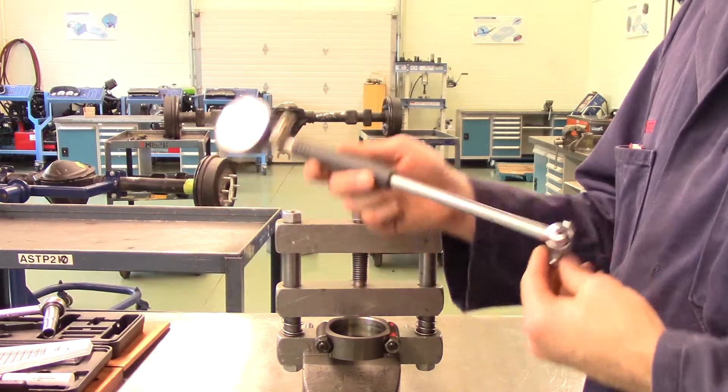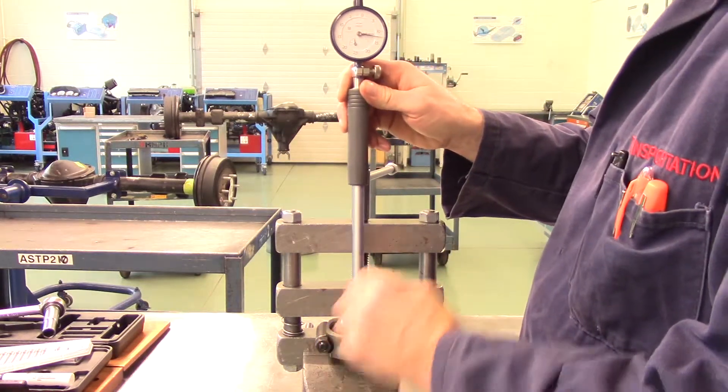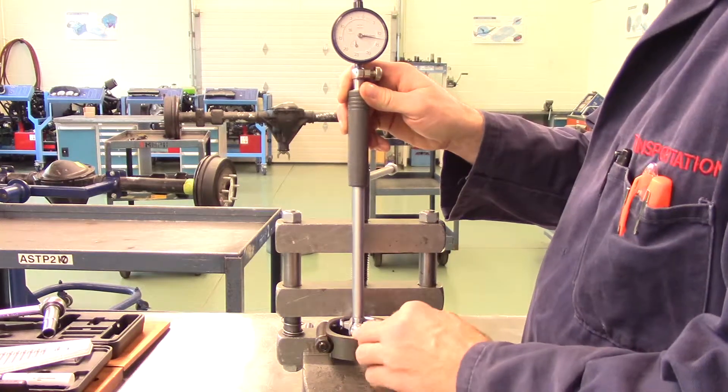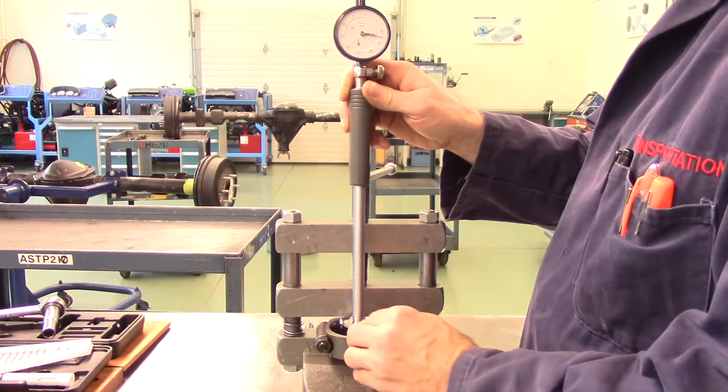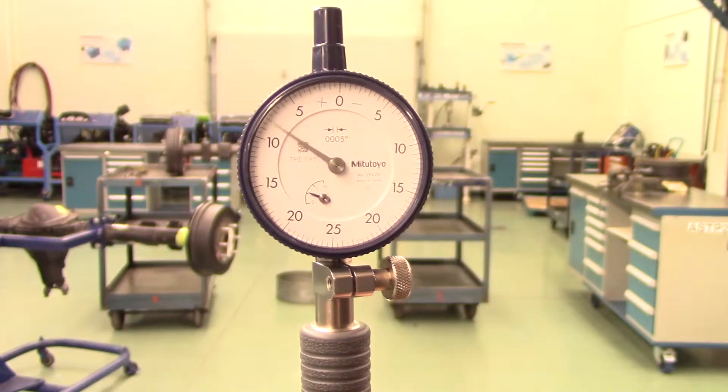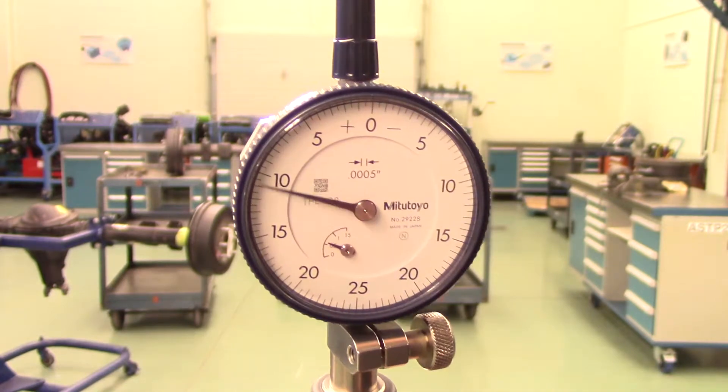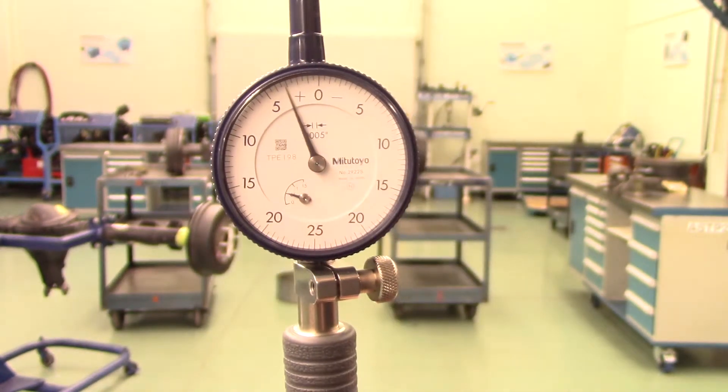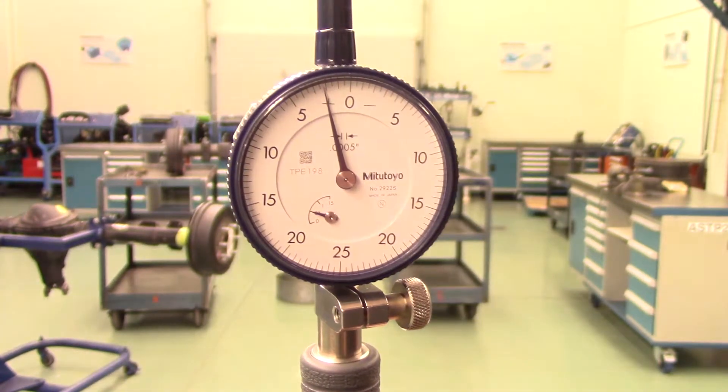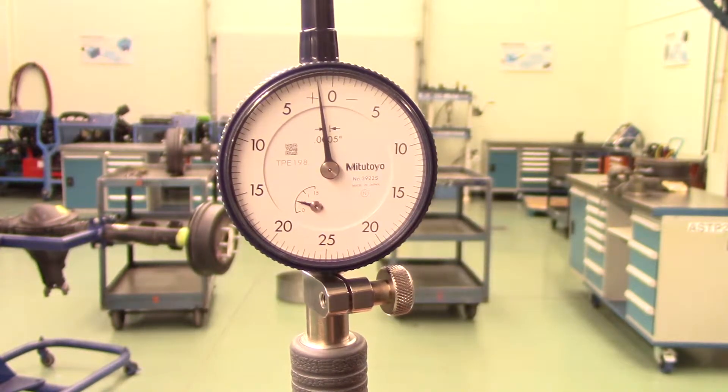We can now measure the size of our bore. Gently place the dial bore gauge into the bore being measured. Again, we must carefully rock the gauge back and forth to determine the point at which the gauge is perfectly square in the bore. This is indicated by the point where the needle will stop and change directions. This precise point of changing direction is where we will take our measurement.